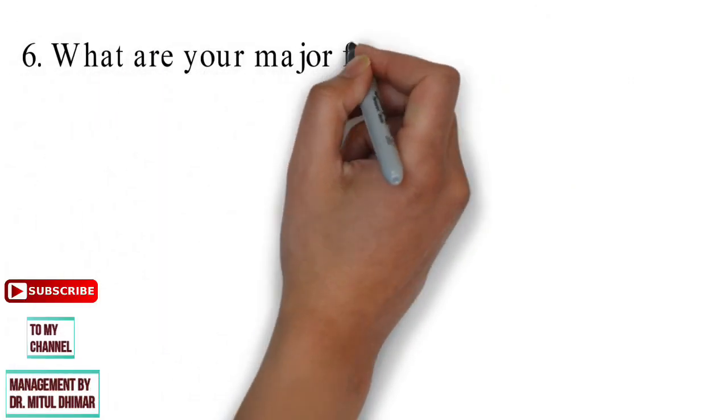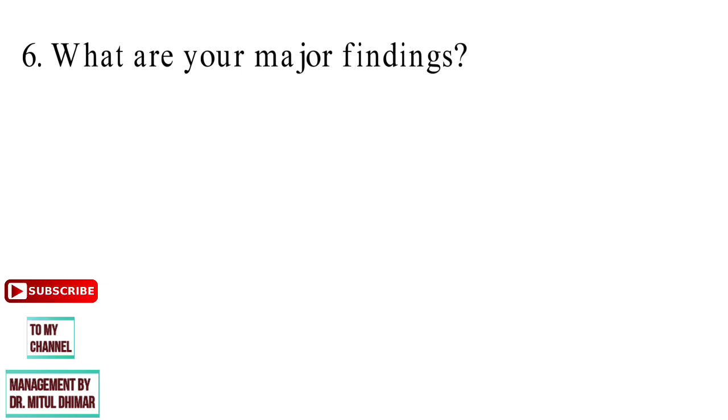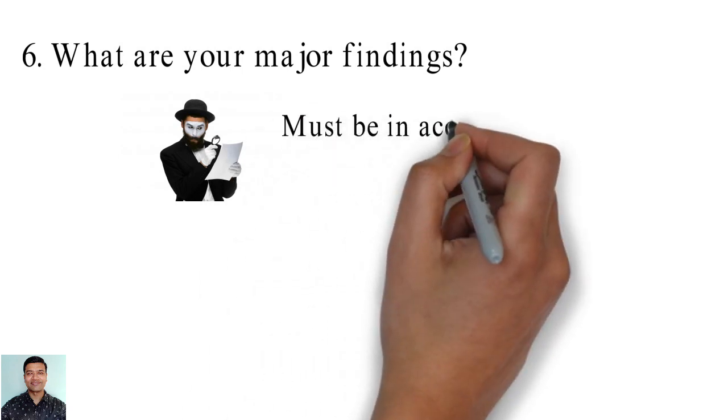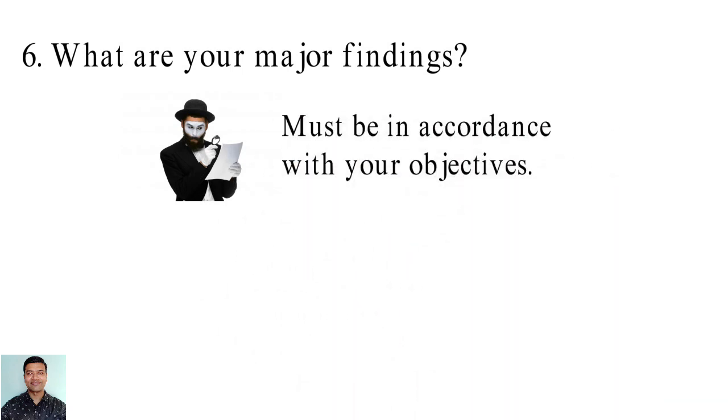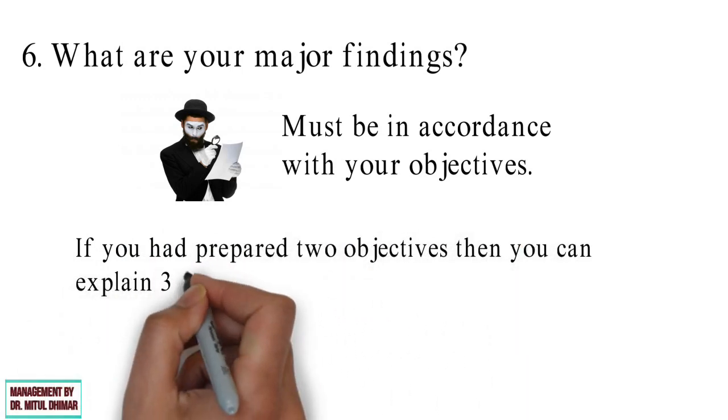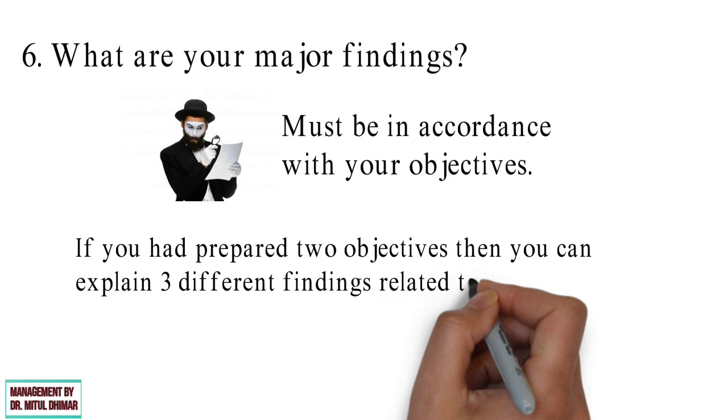Question number 6: What are your major findings? Obviously you will have so many findings after completing your research, but your answer must be in accordance with your objectives. If you had prepared two objectives then you can explain three different findings related to your objectives.